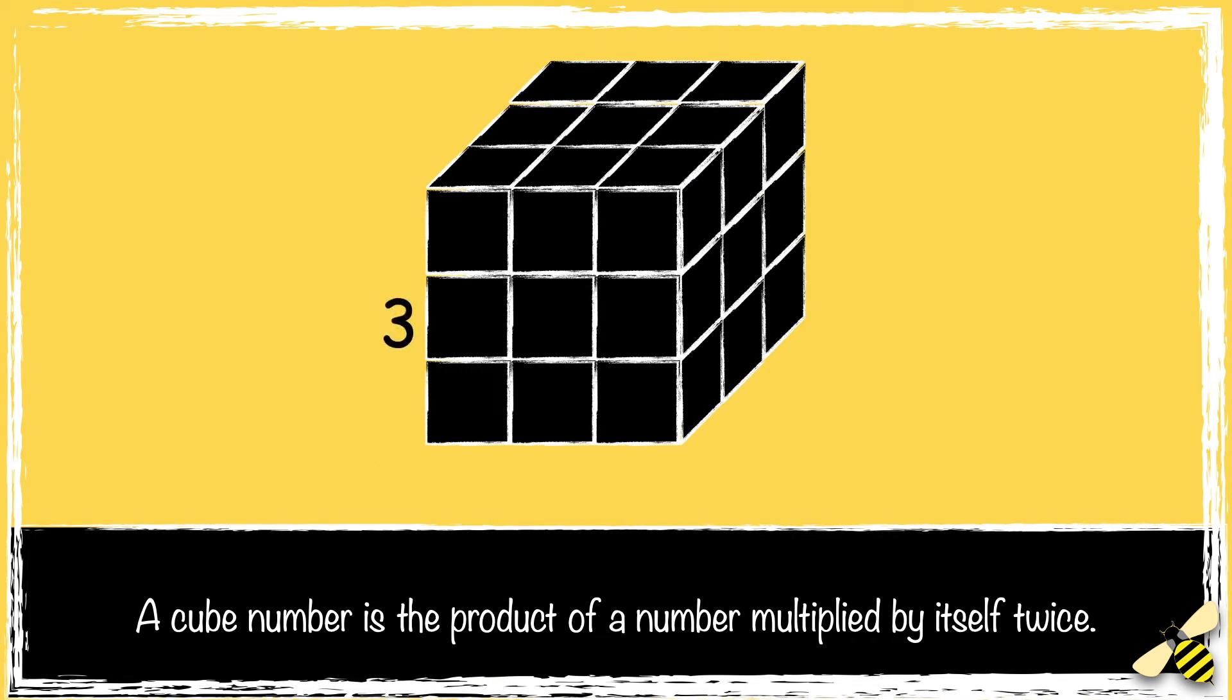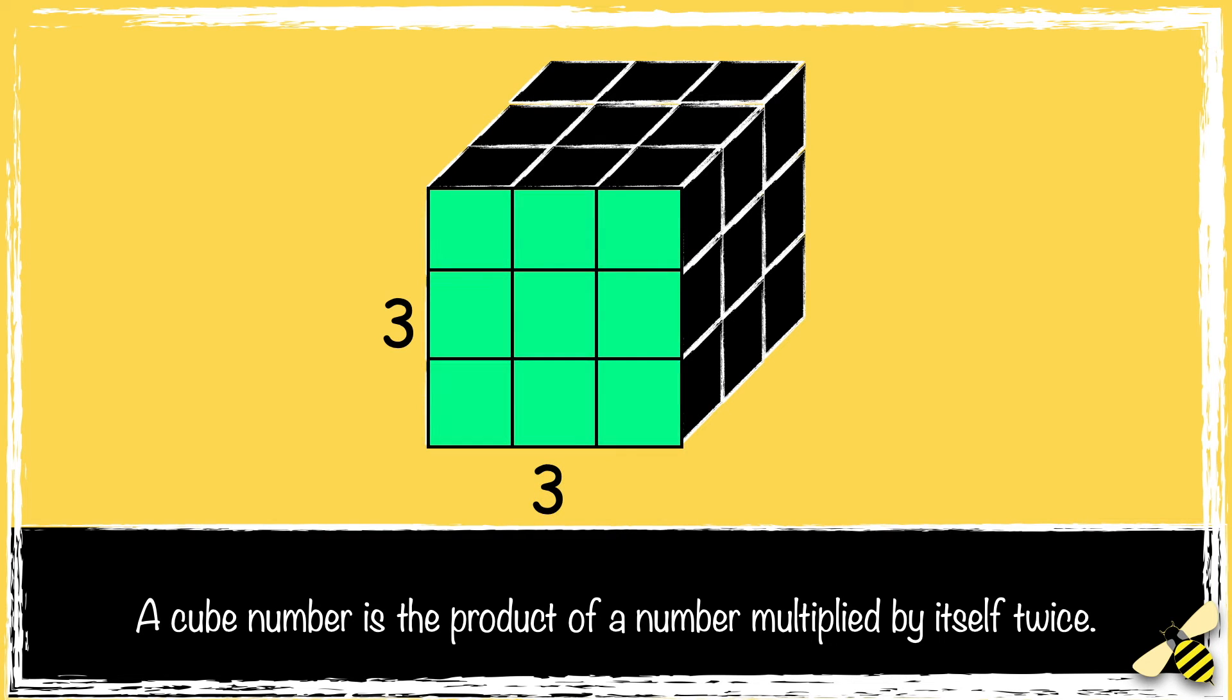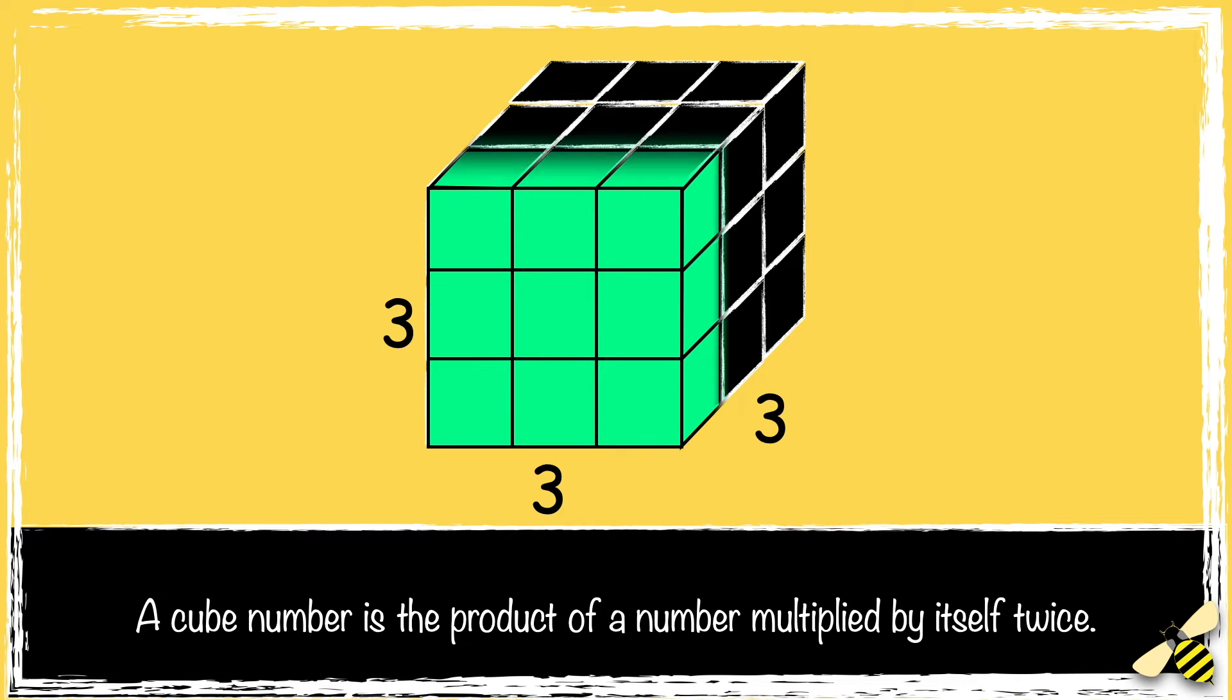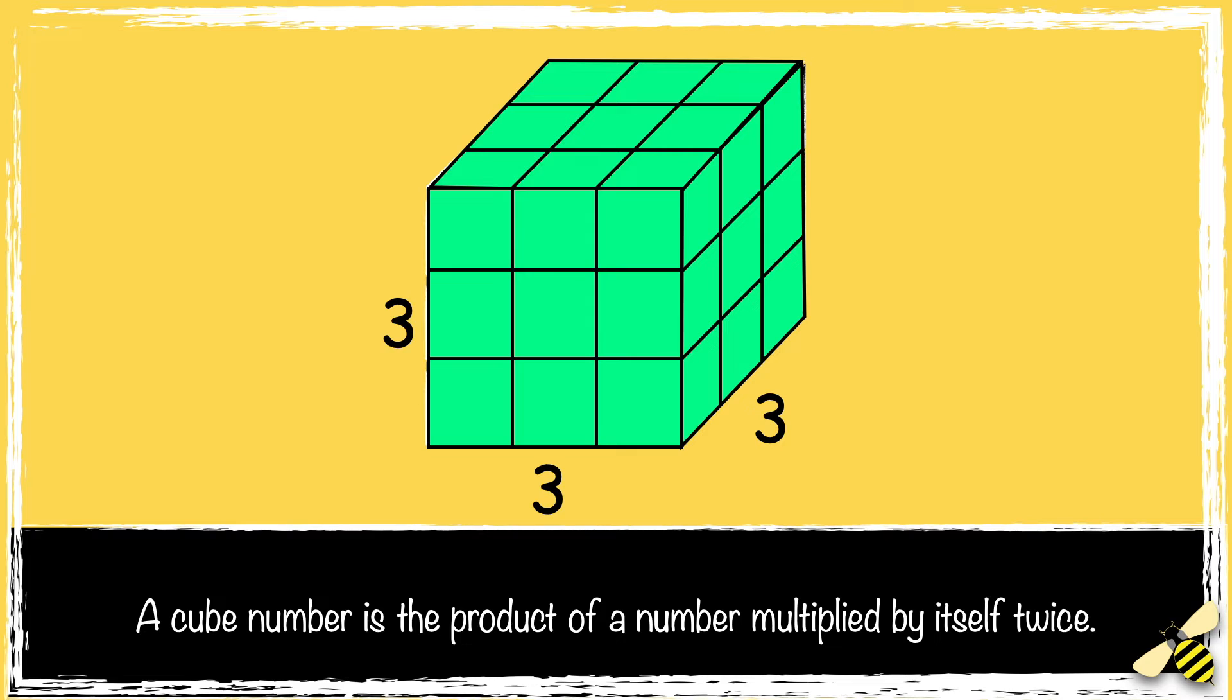So we have 3 multiplied by 3, which makes the square number 9. But in a cube number we have a third dimension. So 9 times 3 is 27.